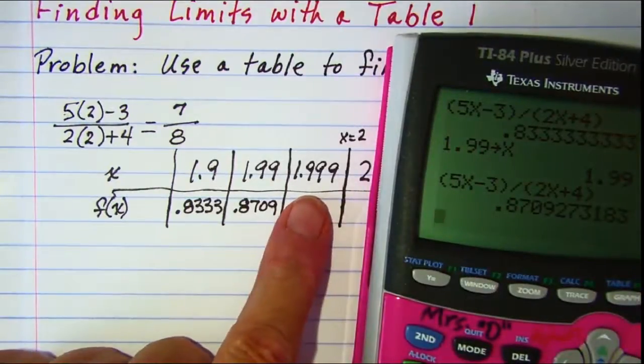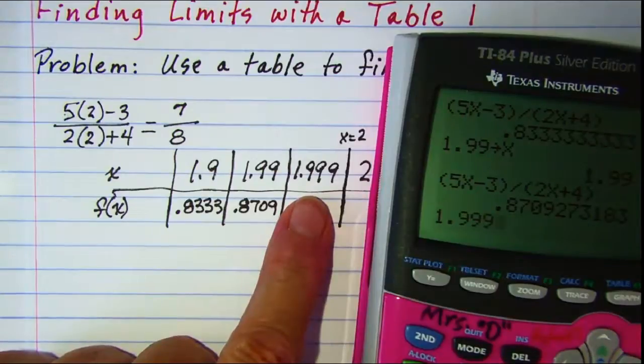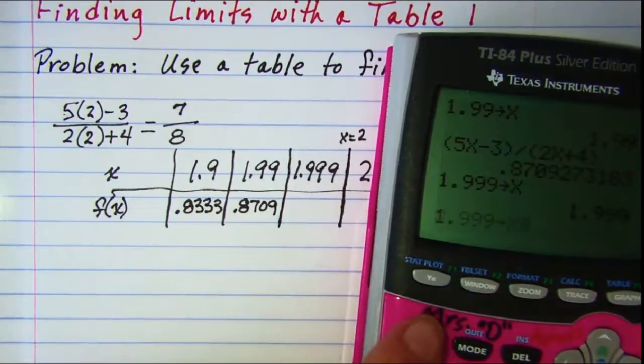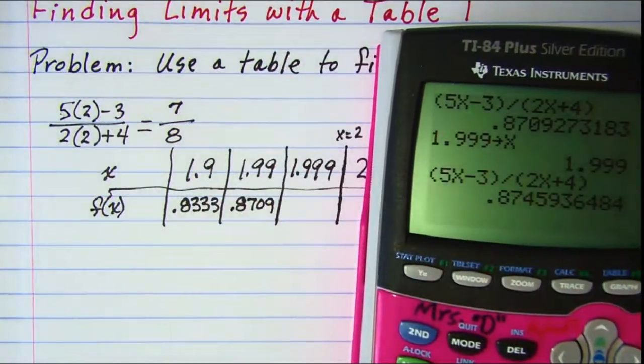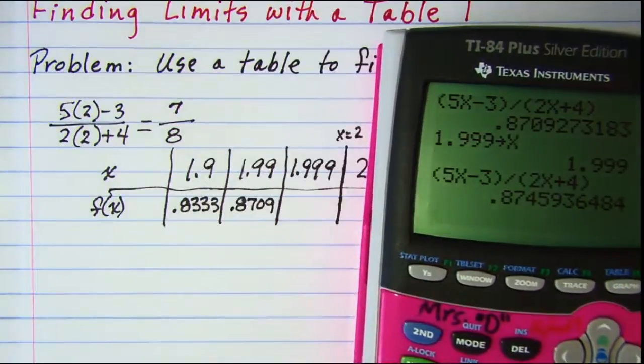Now let me do 1.999 store x and then 2nd enter, 2nd enter and I have 0.8746.